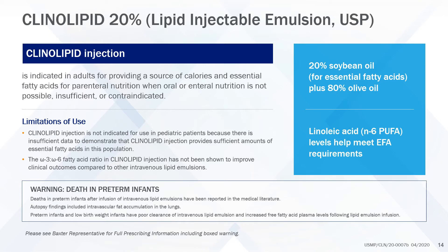Soybean oil-based lipid emulsions were the first commercially viable lipid emulsions on the market for human use. Due to their undesirable effects, alternative lipid emulsions were manufactured. One of these is clinolipid, composed of 80% olive oil — low in omega-6 PUFA and high in omega-9 MUFA — and 20% soybean oil. The soybean oil supplies the requirements for linoleic acid and essential fatty acid. Clinolipid is indicated in adults for providing a source of calories and essential fatty acids for parenteral nutrition when oral or enteral nutrition is not possible, insufficient, or contraindicated.